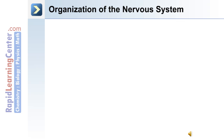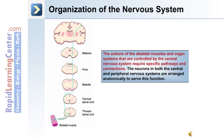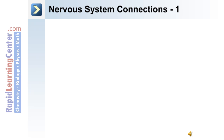Now we'll discuss the organization of the nervous system. The image on the left depicts the flow of information through the brain, midbrain, medulla, brain stem, into the cervical and thoracic spinal cord and out through the peripheral nervous system to the skeletal muscle. The actions of skeletal muscles and organ systems are controlled by the central nervous system, requiring specific pathways and connections. The neurons in both the central and peripheral nervous systems are arranged anatomically to serve this function.